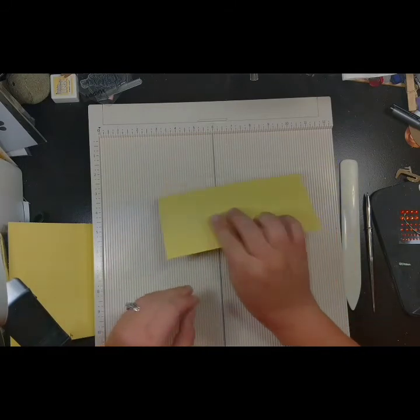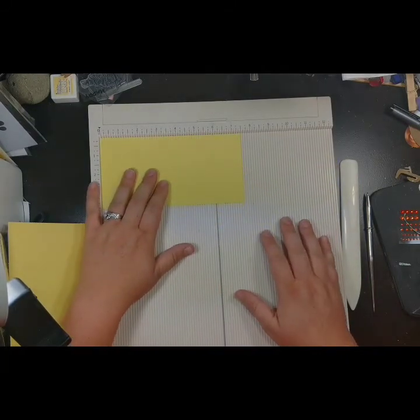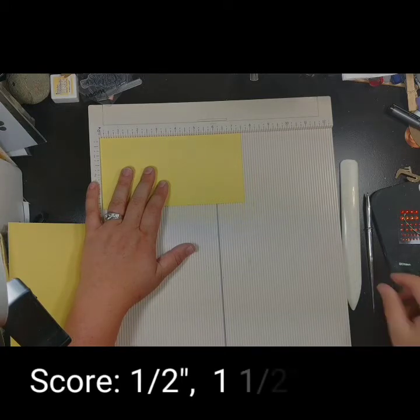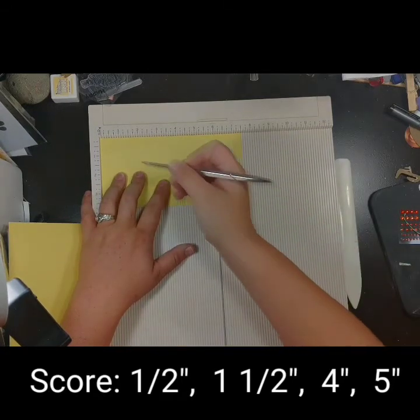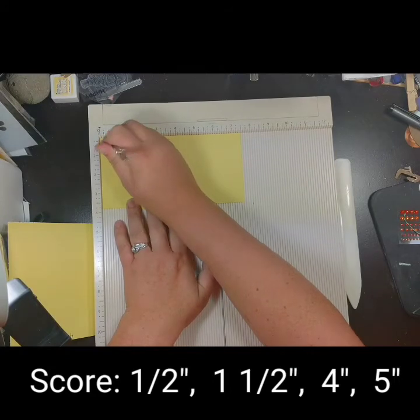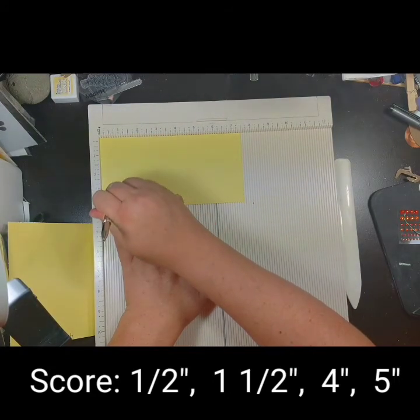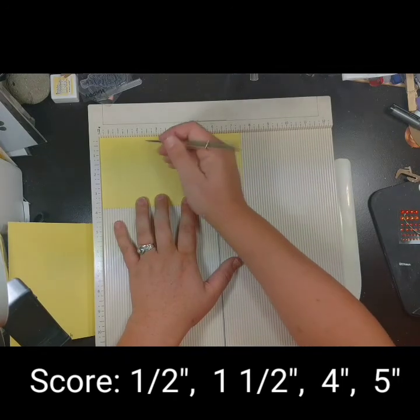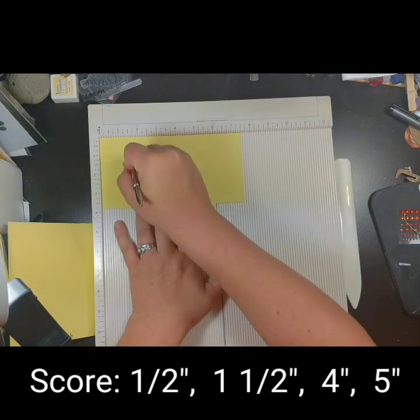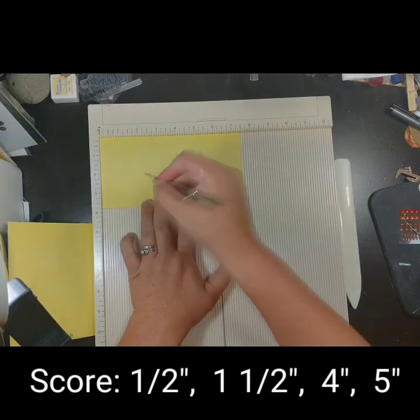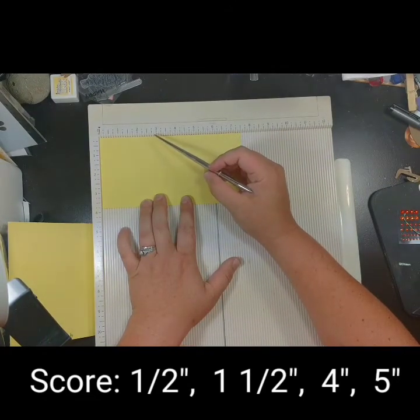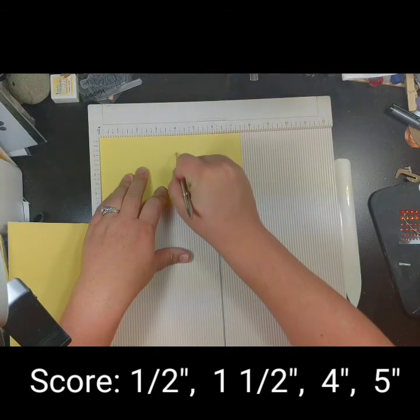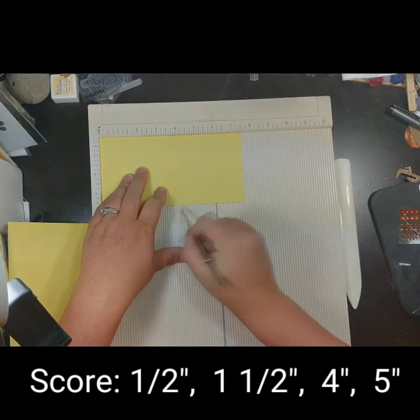Position the outer box piece, the one that measures three and three-quarters by seven and a half, horizontally with the long side along the top and score the paper at one half inch, one and a half inches, four inches, and five inches.